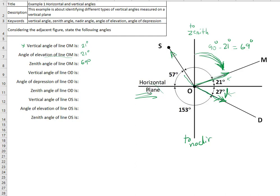The vertical angle of line OD: OD is below the horizon, so measuring from the horizontal plane going down, this is negative 27 degrees. The angle of depression of line OD — the angle of depression is always an absolute value because depression means below the horizon — so it is 27 degrees.